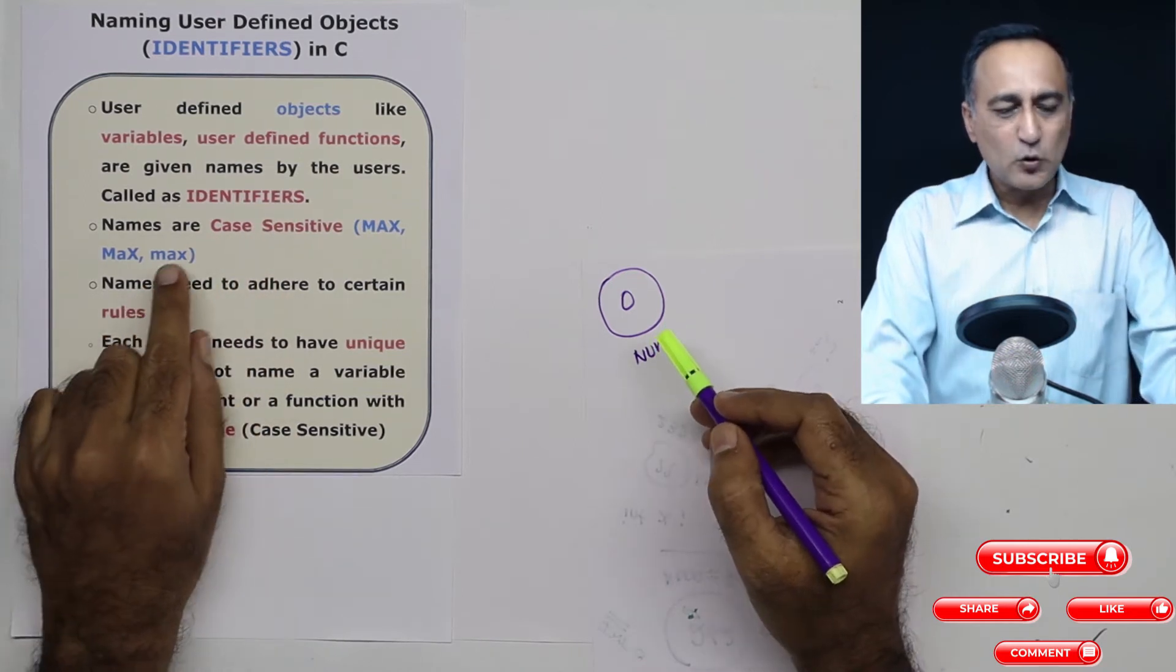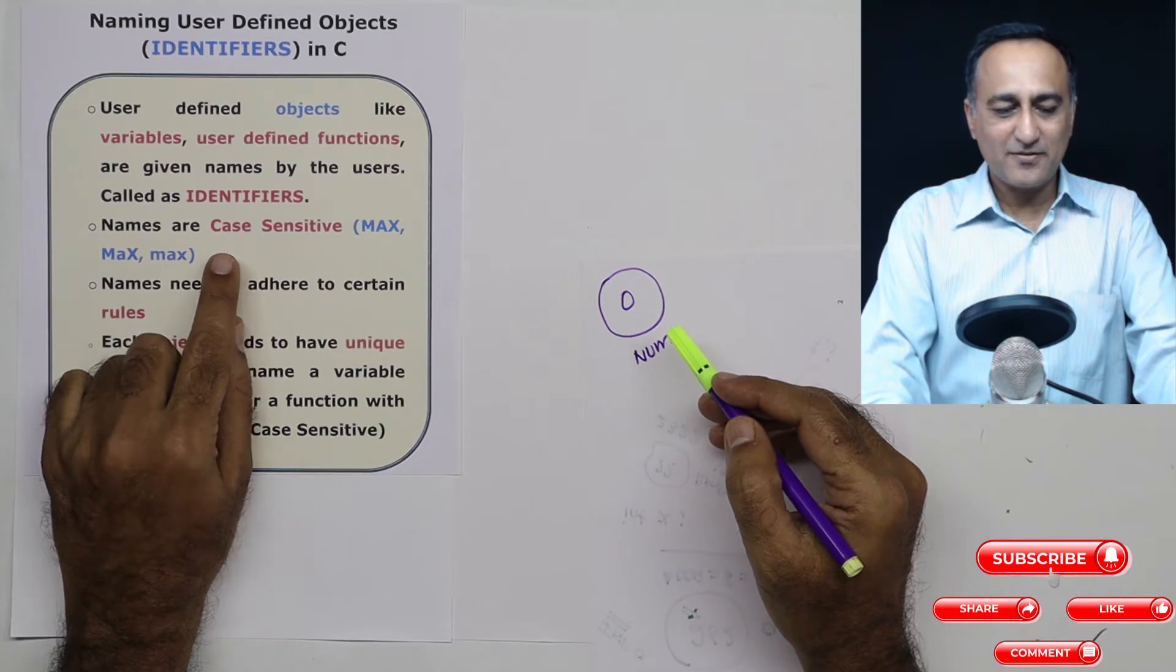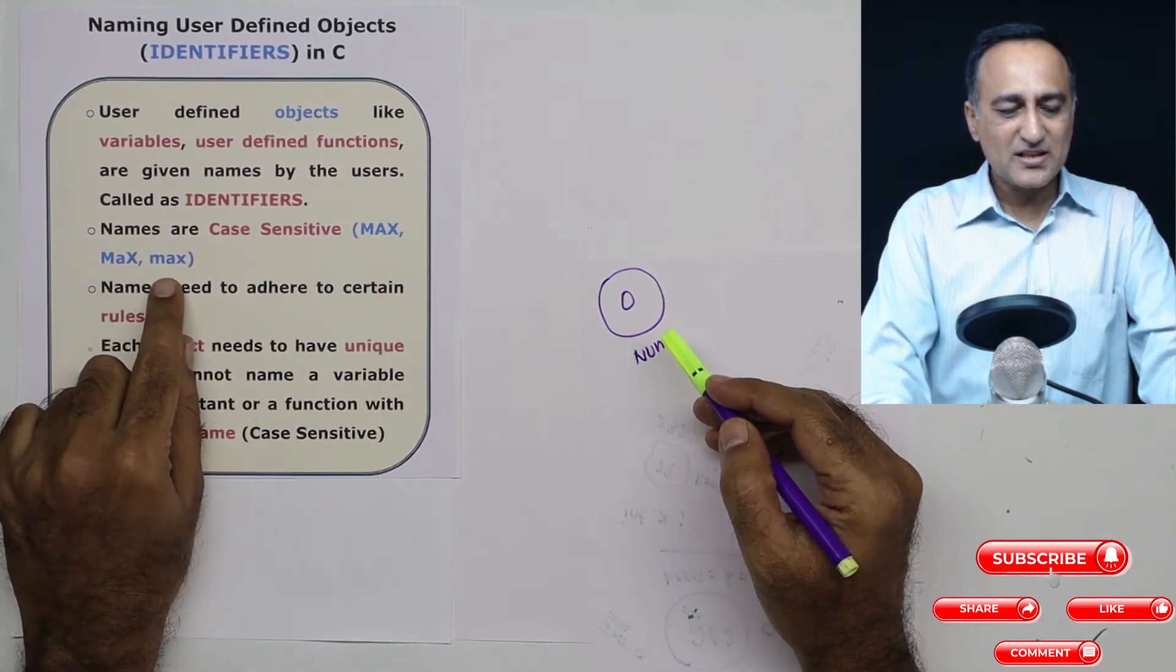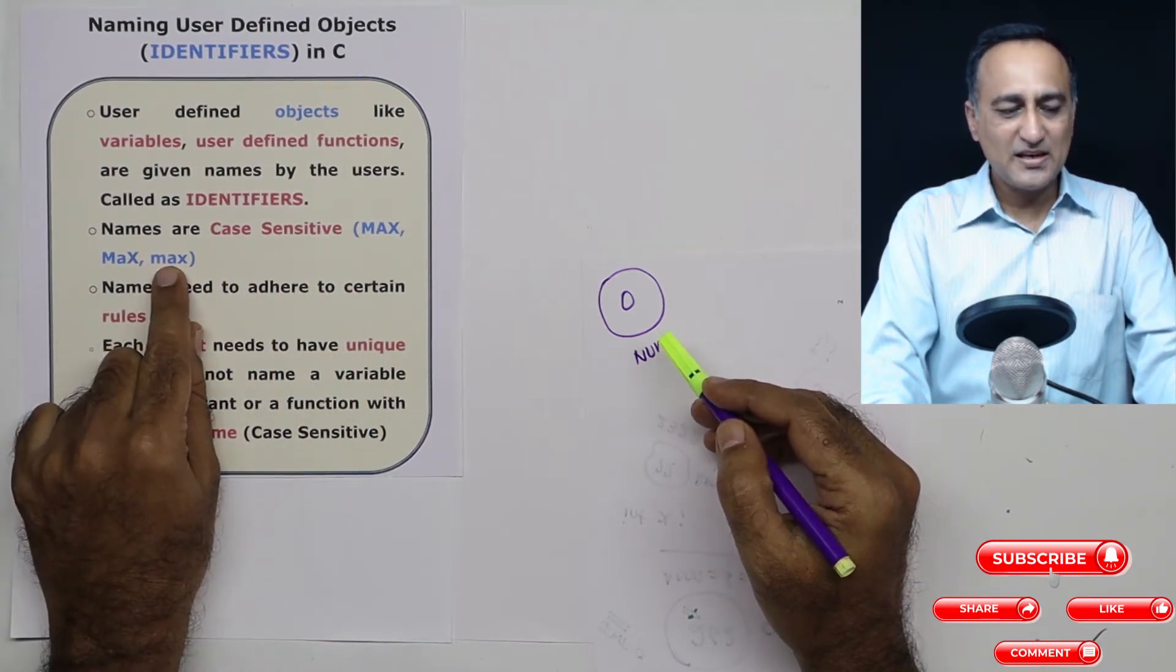The very first rule with C is the names are case sensitive. This name max, this is very different from this. These are all three different names according to the C compiler.